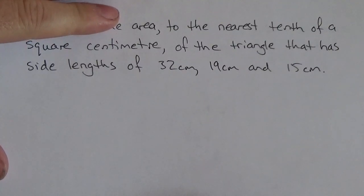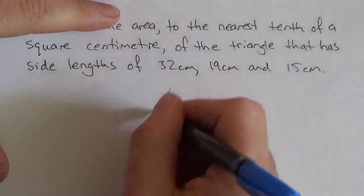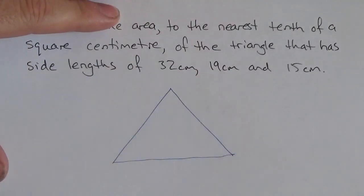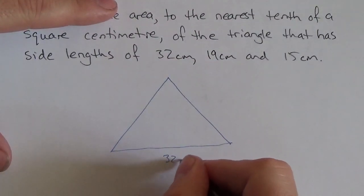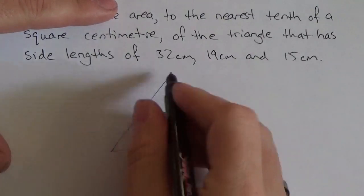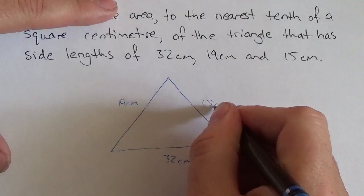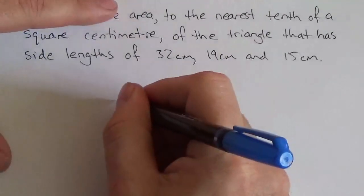Well, let's first of all draw this up. Let's see what it looks like here. So, there we go. The way I'm going to label this, we're going to put the 32 down here, 32 centimeters. And then one side is longer than the other, so it's going to be 19 centimeters and 15 centimeters. So we've got all three sides.